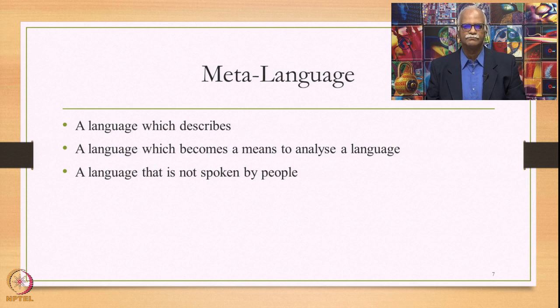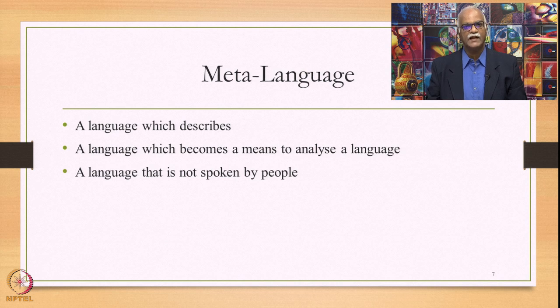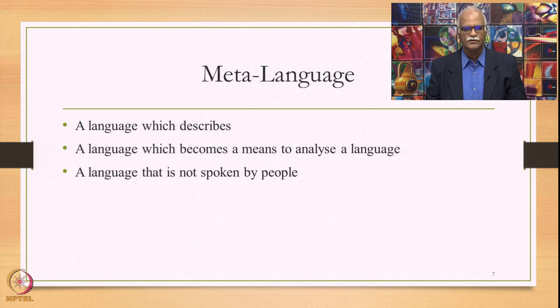Meta-language, on the other hand, is a language which describes the object language. Meta-language can also be said to be a language which becomes a means to analyze a language. Certainly, meta-language is not a language that is spoken by people; meta-language is the language of grammar, whereas object language is the language that is spoken by people.